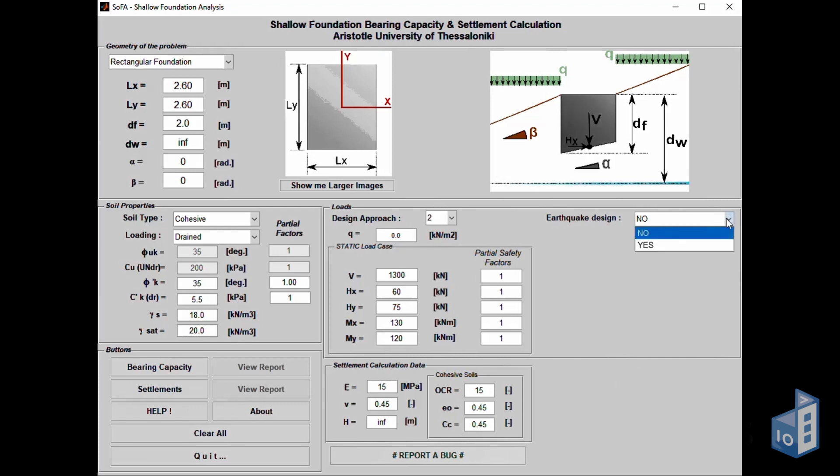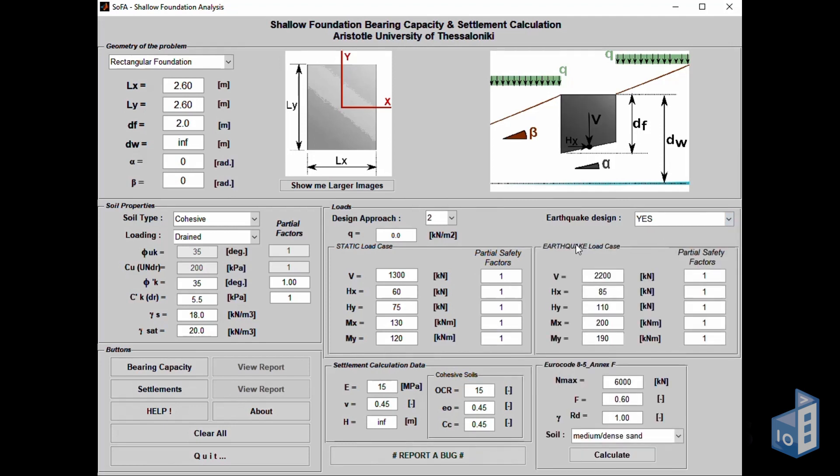In terms of input, the user can choose if they wish for earthquake design to be included or not in the analysis. The earthquake input parameters used are similar to the ones in the static case. More specifically, vertical and horizontal forces are set, as well as X and Y direction moments.